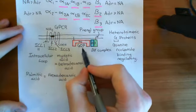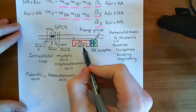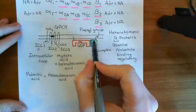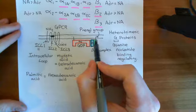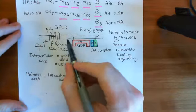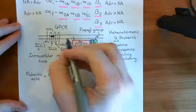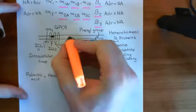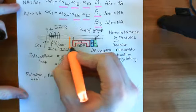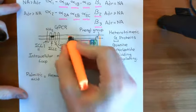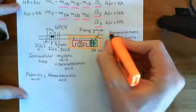When the alpha subunit is in the off state — bound to GDP — it binds to the beta-gamma complex, forming the assembled heterotrimeric G protein. The entire assembled complex is the heterotrimeric G protein.